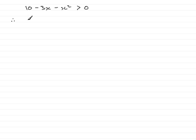So we're going to multiply through by -1. So we end up with -10 + 3x + x². But this is the bit where you've got to be very careful because you must remember that when you multiply by a negative number,